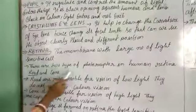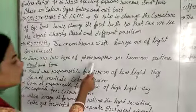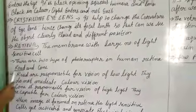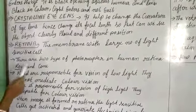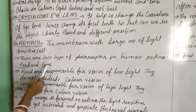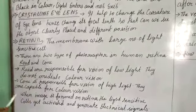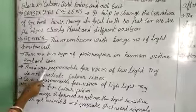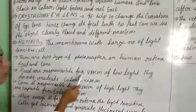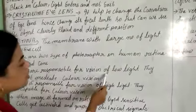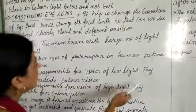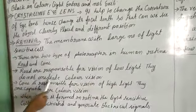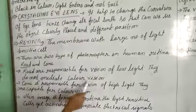There are two types of photoreceptors in human eyes: rods and cones. Rods are responsible for vision in low light conditions. They do not mediate colored vision.